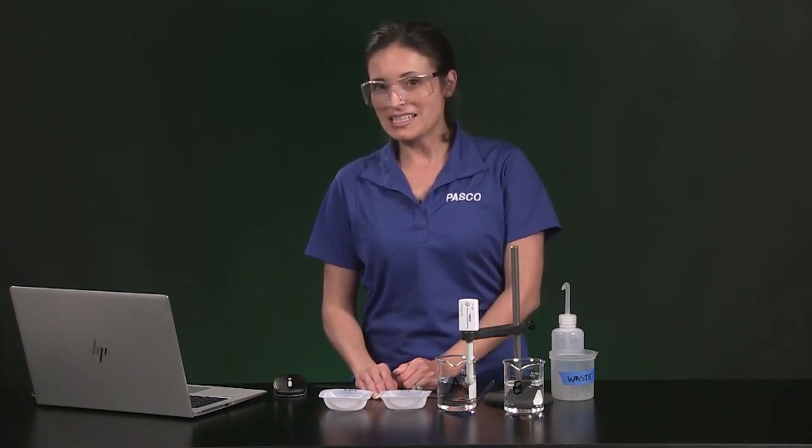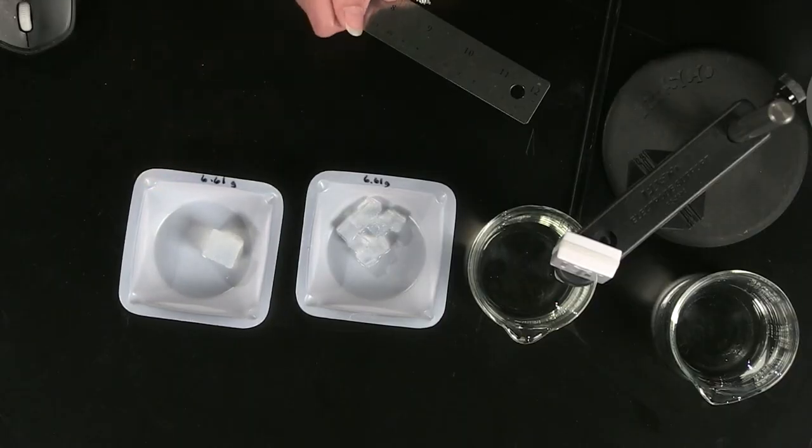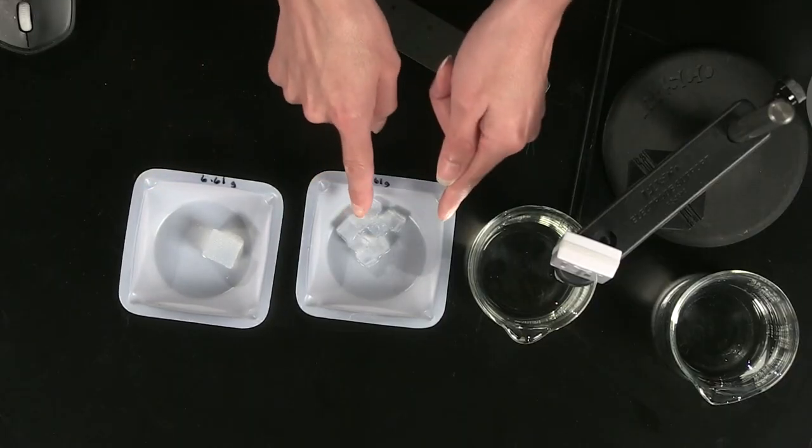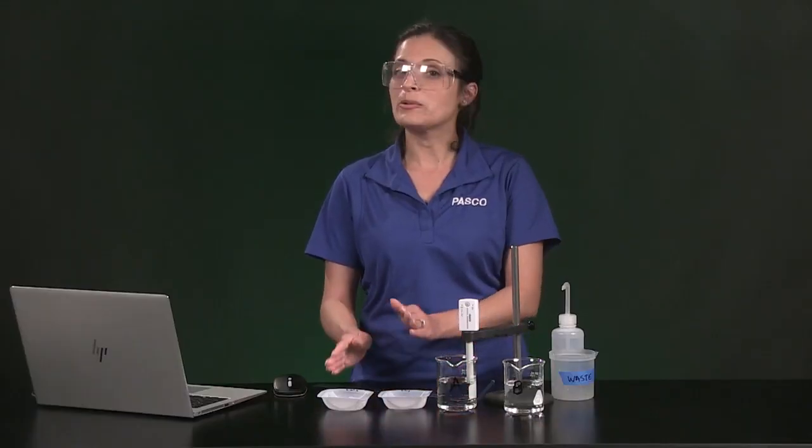You will need to record the following masses in Table 1. Sample A has a mass of 6.61 grams, and all of these pieces that make up Sample B together total 6.61 grams, so we are working with equal masses.